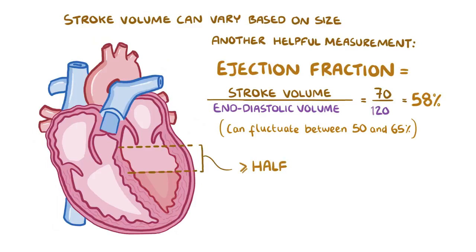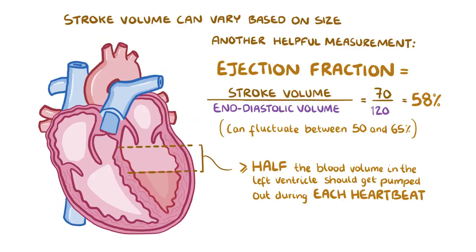In other words, at least half of the blood volume in the left ventricle should get pumped out during each heartbeat. In hearts that have a low contractility, or a low force of contraction, the ejection fraction can fall below 50 percent.